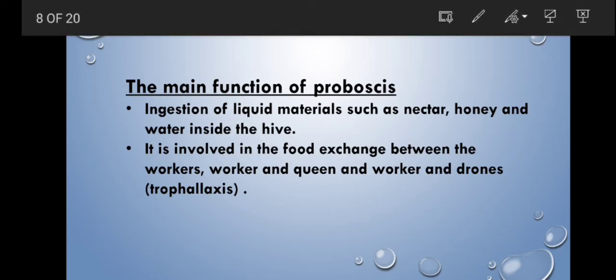The main functions of proboscis is ingesting the liquid materials such as nectar, honey, water inside the hive. And it is involved in the food exchange between the workers and workers and queens and workers and drones. This type of mechanism is called trophallaxis.